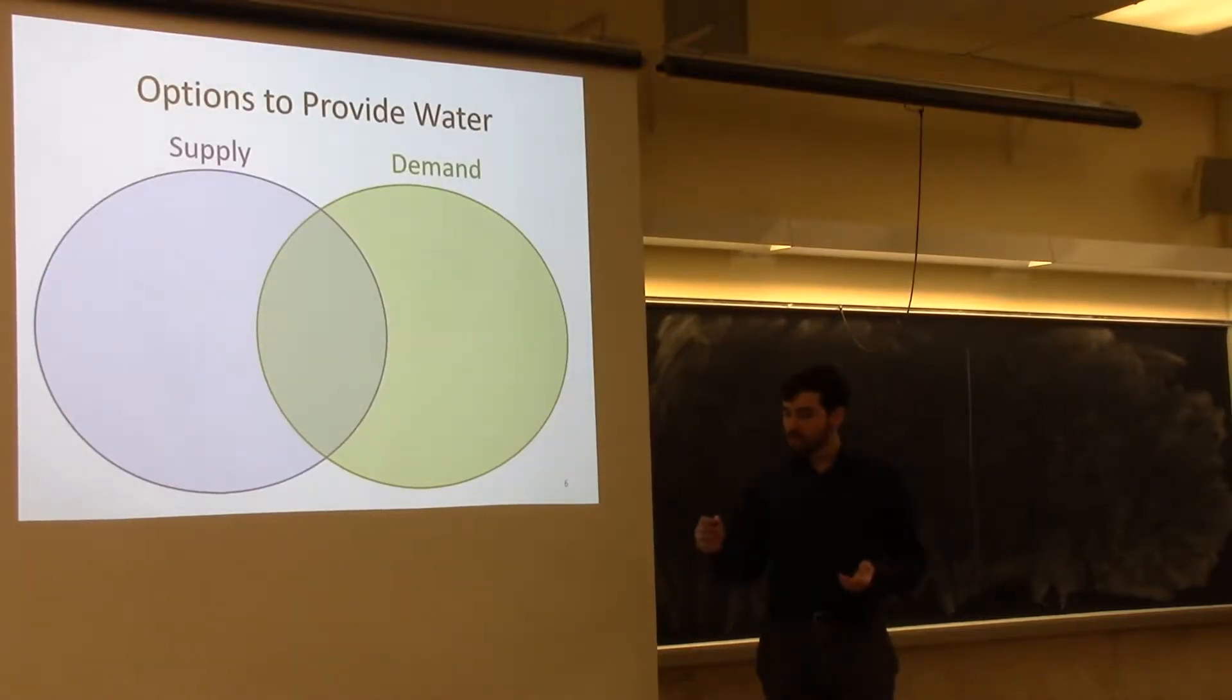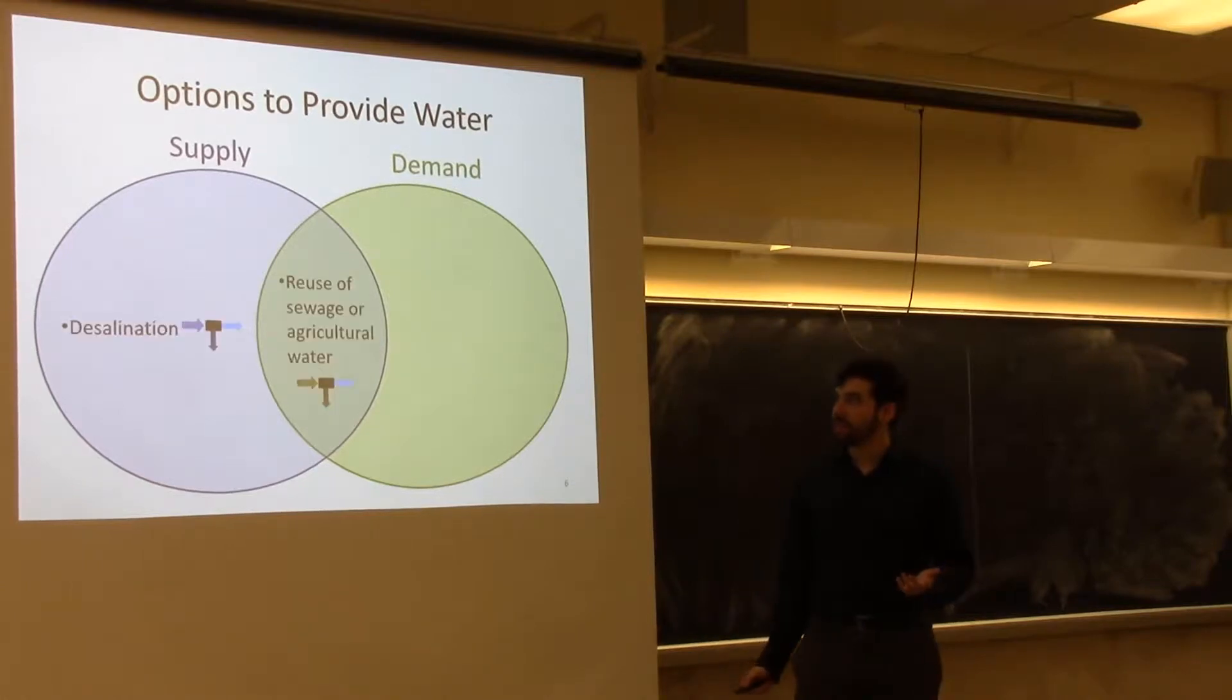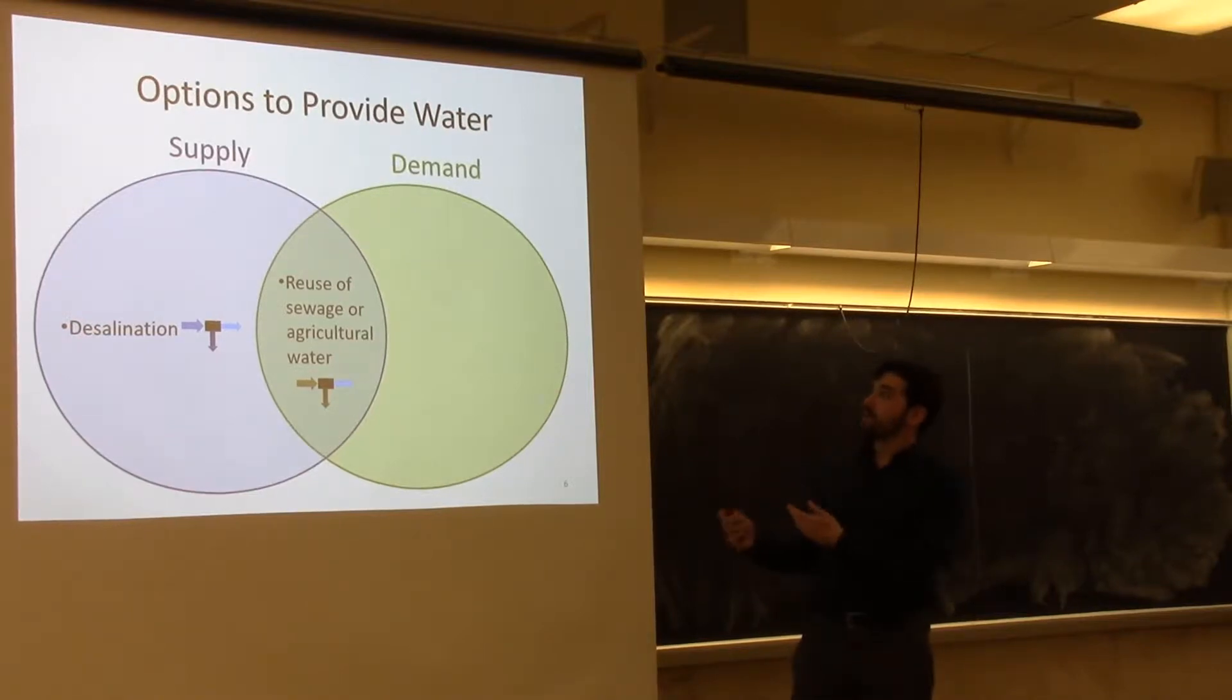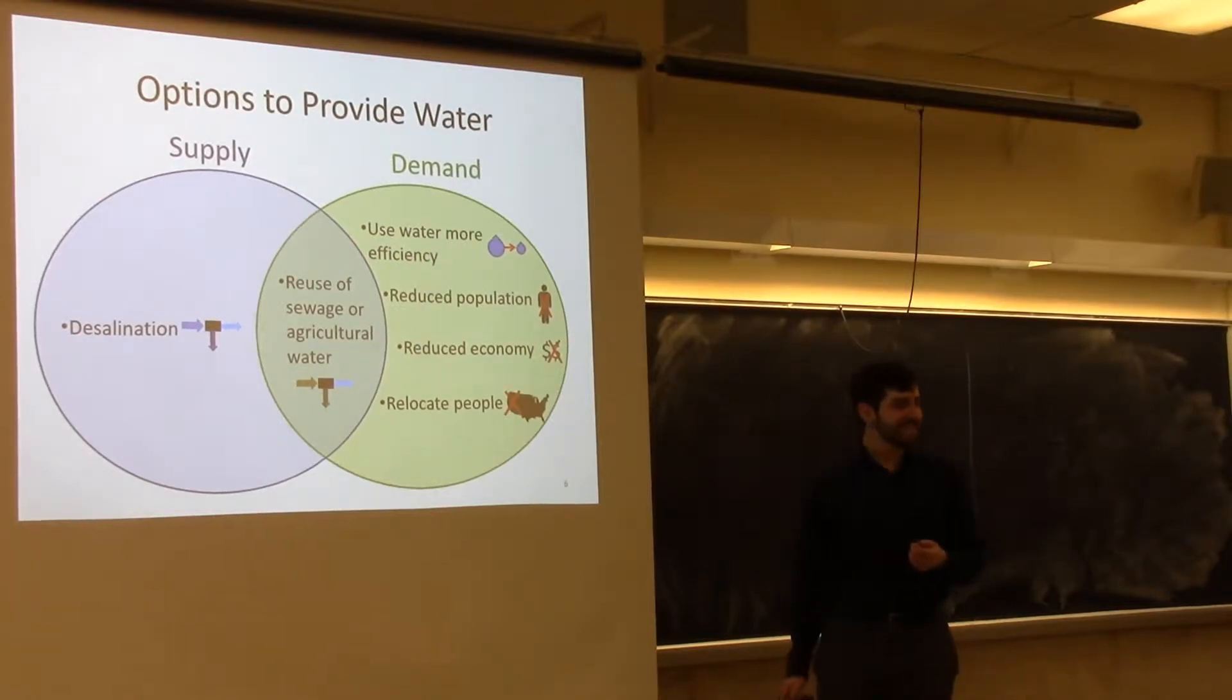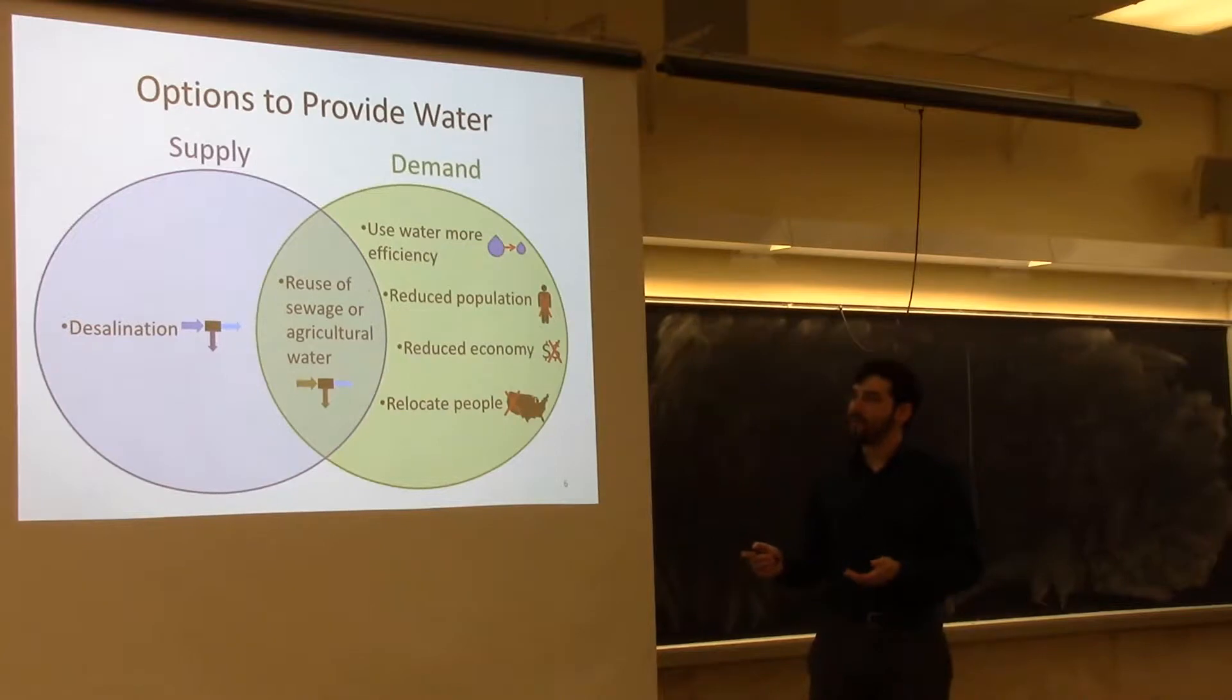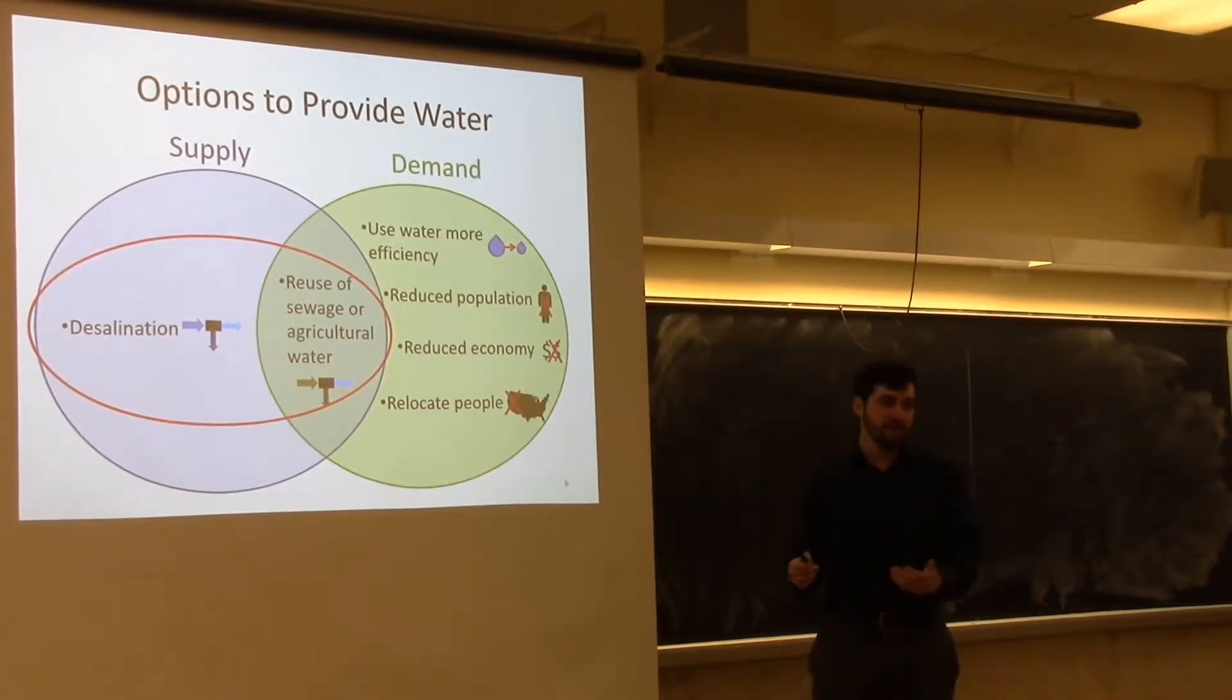We need to increase our water supply. How do we do this? We have global water scarcity. We can increase the supply side, which means we can desalinate seawater or desalinate wastewater or sewage water. Alternatively, to deal with water scarcity issues, we can reduce the demand. A lot of these are not very realistic, favorable, or good ideas. We can't really just reduce population or reduce the size of the economy or relocate people. So therefore, we very quickly move to using desalination for either seawater or for water reuse.